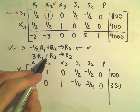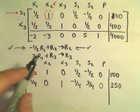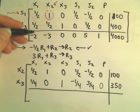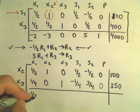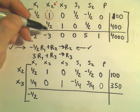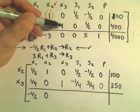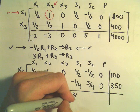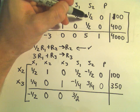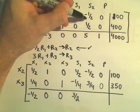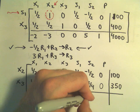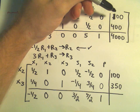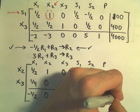Next, I have to do 3 times R1 and add that to row 3. So 3 times one-half is three-halves, plus negative 2 gives us negative one-half. We'll get 3 plus negative 3 which is 0. 3 times 0 plus 0 is 0. Three-halves plus 0 is three-halves. Negative three-halves plus 5 is ten-halves, and negative three-halves plus ten-halves is seven-halves. We get 0 plus 1 which is 1, and 300 plus 4,000 which is 4,300.